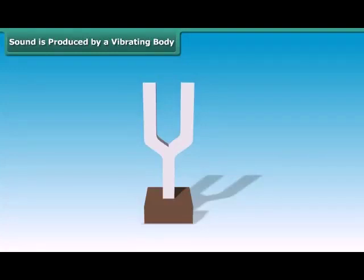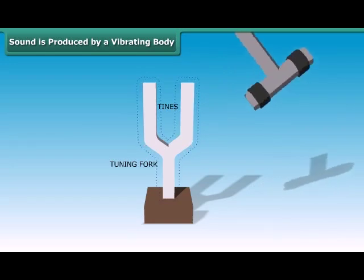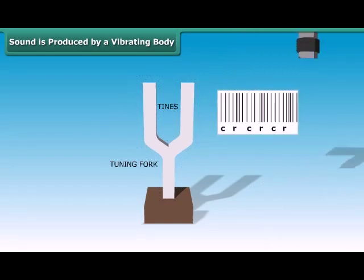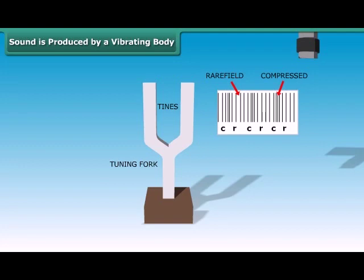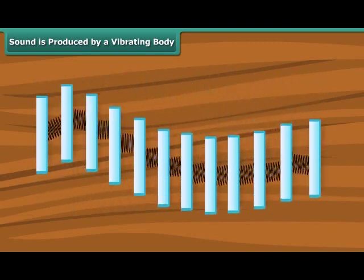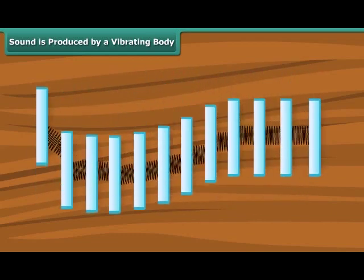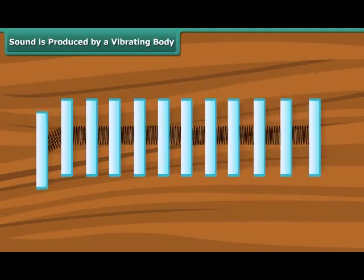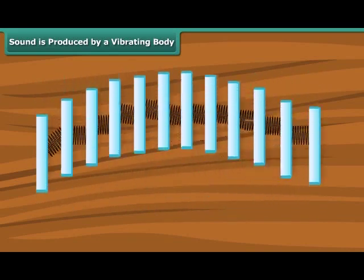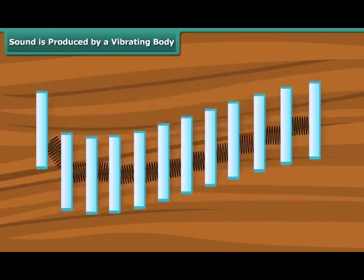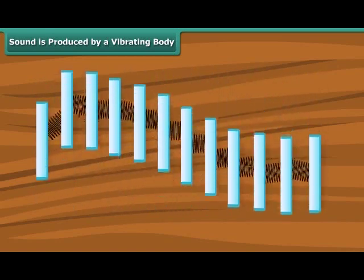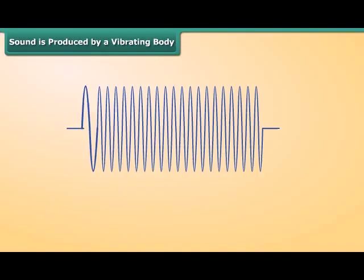Sound is produced by a vibrating body. Sound is a pressure distribution that moves through a medium in the form of mechanical waves. When a force is exerted on an atom, it moves from its rest or equilibrium position and exerts a force on the adjacent particles. These adjacent particles are moved from their rest position, and this continues throughout the medium. This transfer of energy from one particle to the next is how sound travels through a medium.